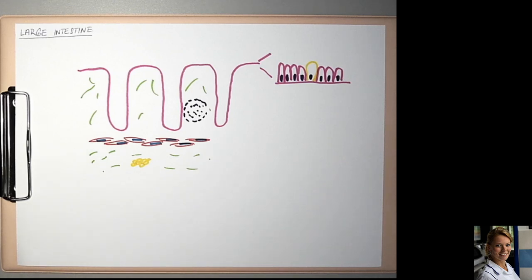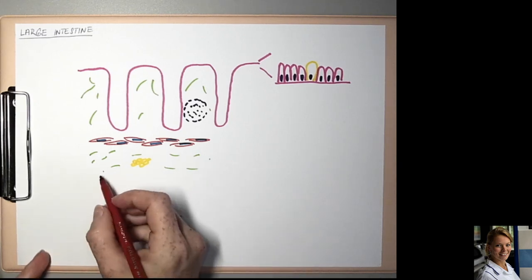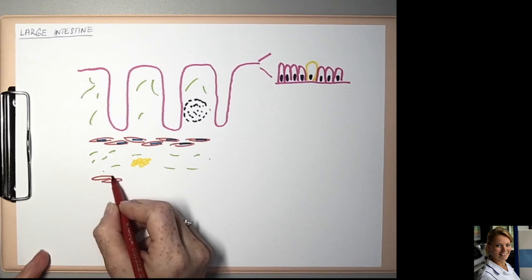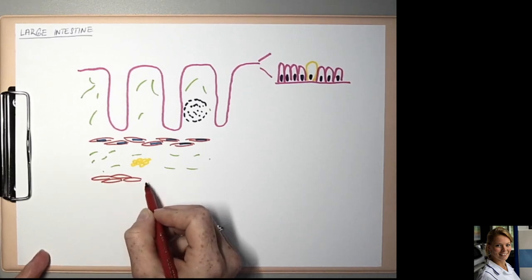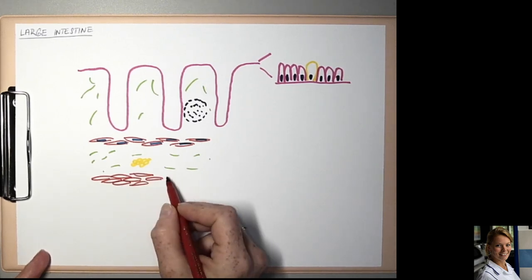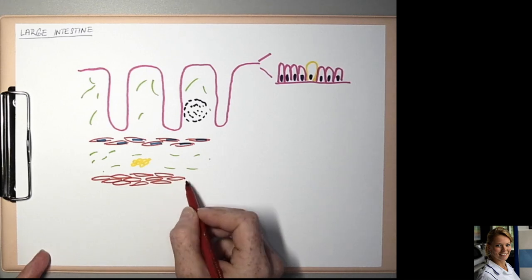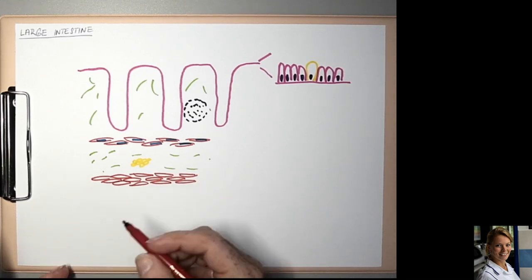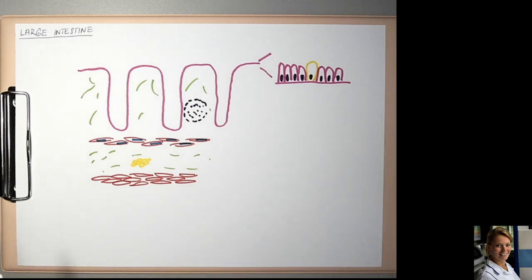The next tunica is the tunica muscularis externa which is formed by smooth muscle cells and is subdivided into two layers, inner circular layer and outer longitudinal layer. So cells in the circular layer you can see in the longitudinal section in the cross section through the large intestine.